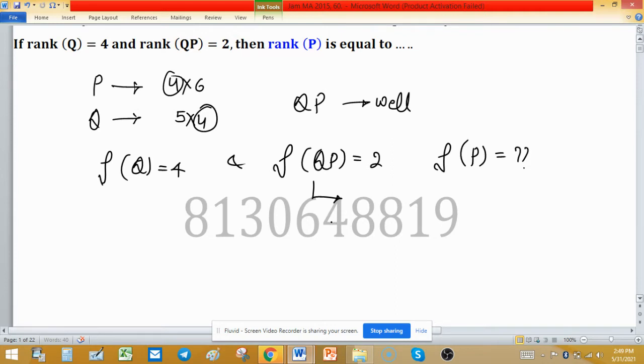And we're asked about rank of P. This is a product of two matrices, so rank of the product has some relation. Rank of QP is always less than or equal to the minimum of the individual ranks: rank of Q and rank of P.